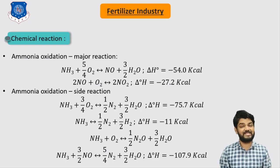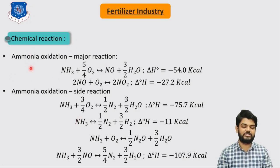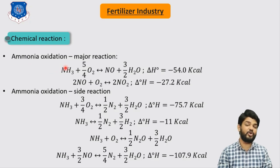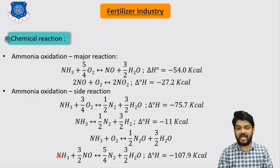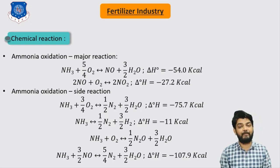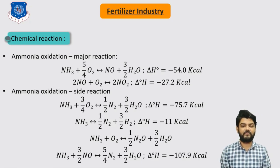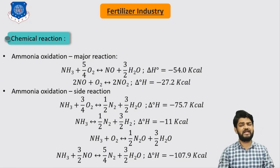The production of nitric acid involves three steps of chemical reactions. The first is the ammonia oxidation reaction, which is the major reaction. Then there is a side reaction which also takes place, and lastly we will see how we can convert the oxidized form of ammonia into nitric acid.